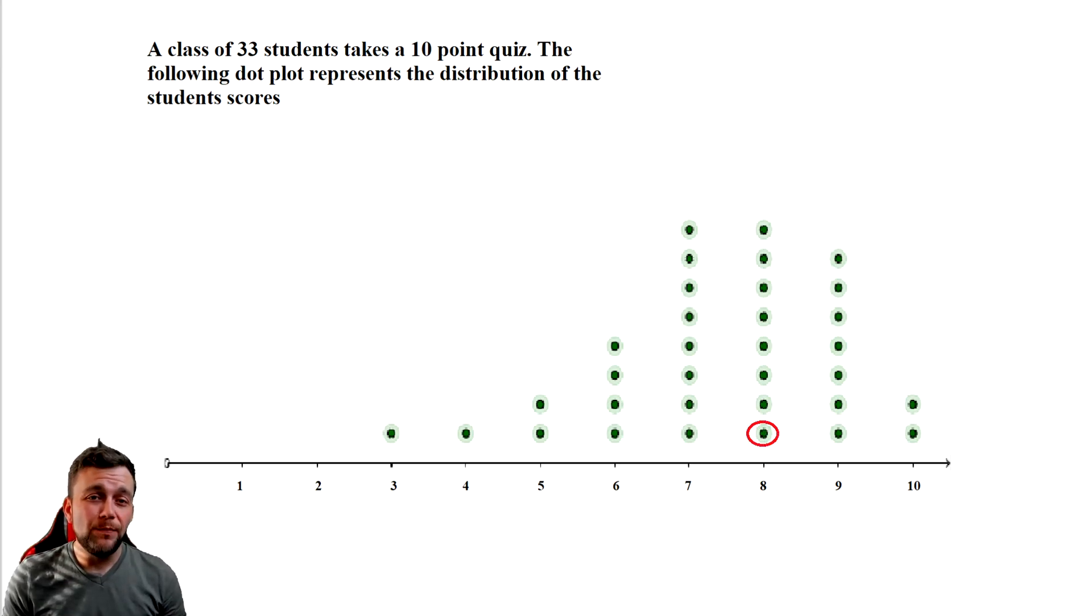Before we move on to box plots, I just want to put this statistical diagram in most simple terms. Each one of these numbers on the number line is an area in your data. The green dots above the numbers are how many points you have of that data point. So at number 5, we have 2 data points of number 5. At number 6, we have 4 data points of number 6. And so on. So let's move on to box plots.